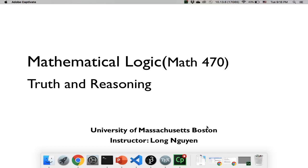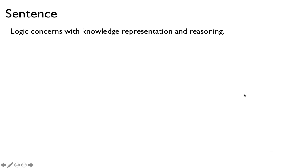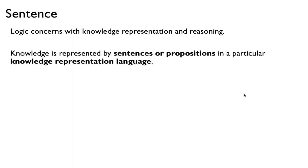Hi, welcome to Mathematical Logic, Math 470 at UMass Boston. This lecture we're going to talk about Truth and Reasoning. So logic concerns with knowledge, representation, and reasoning — how do I take knowledge and represent it, and how do I use that representation and reason with it. Knowledge is represented by sentences or propositions in a particular knowledge representation language. For now, let's talk about what a sentence or a proposition is.